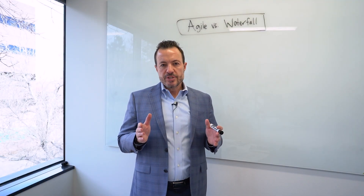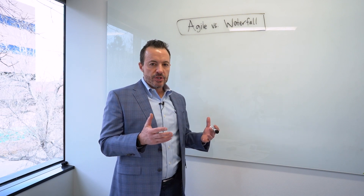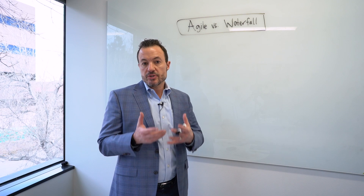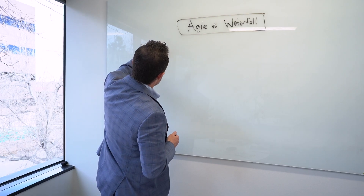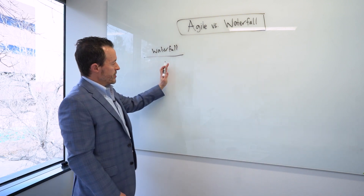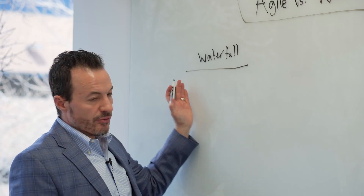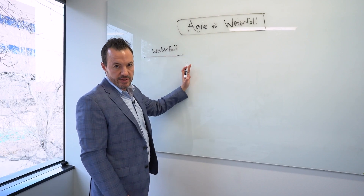To help understand the difference, I'm going to dive into what waterfall is first. Waterfall is a methodology that was historically and traditionally used up until recently — it was almost exclusively used as a way to deploy new technologies. What waterfall is, essentially, is a sequential series of steps that require you to get entirely through a phase of a project and get sign-off and approval before you move on to the next phase.